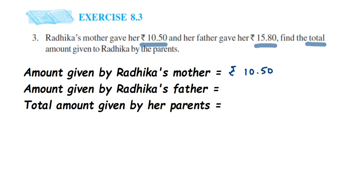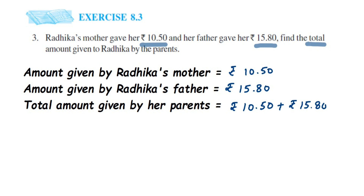We have to find out the total amount, so we have to do addition: rupees 10.50 plus rupees 15.80. When adding these two, we're going to place the decimal one below the other. So we have 10.50, and now place the second number below it — on the right side we have 80.